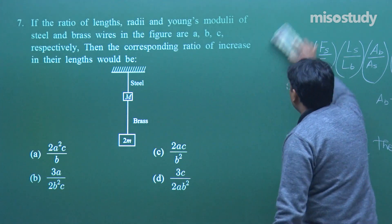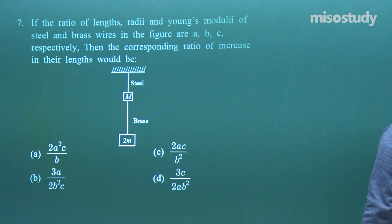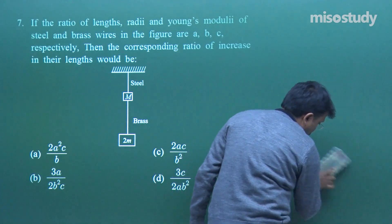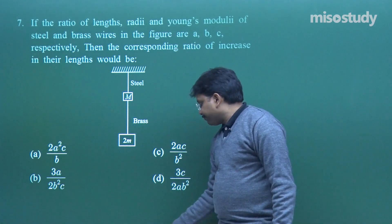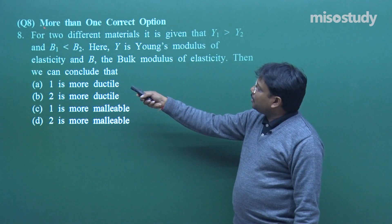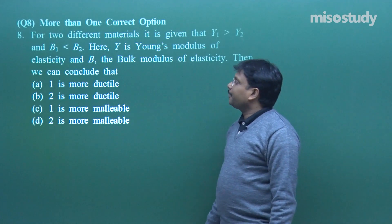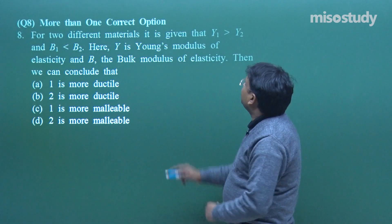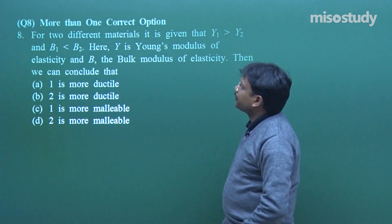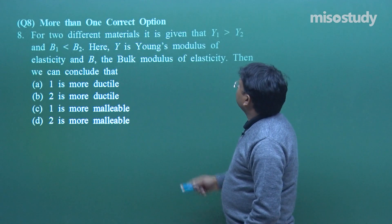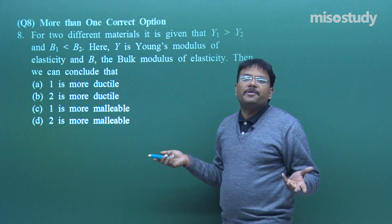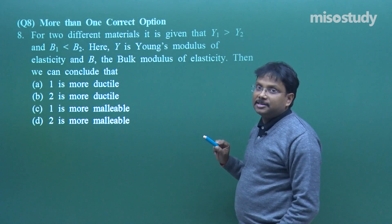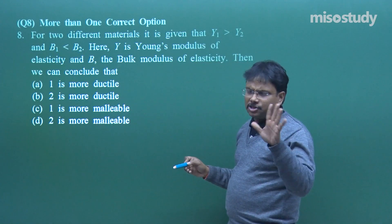There was a slight twist in the question, but otherwise it was not really a difficult question - it was entirely fundamental. Let's move to question number 8. In this question there can be more than one correct option. Different materials are given for which Young's modulus is given - the first material's Young's modulus is greater than the second. And B1 is less than B2. Y is Young's modulus, and B represents bulk modulus in normal terms.